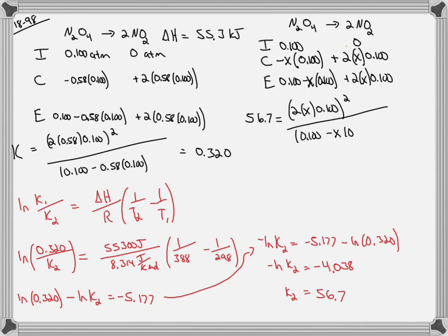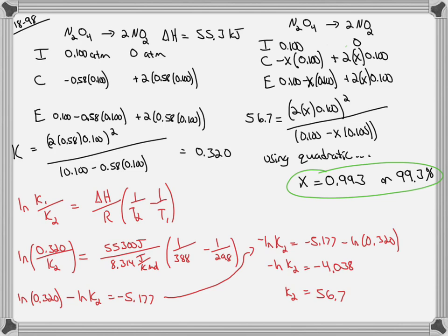This is now going to require the use of the quadratic formula. So I don't have any space left to show you the quadratic formula, but you can go back and review how to solve this quadratic equation with a quadratic formula. You should get your X value equal to 0.993, which would then correspond to 99.3%.